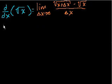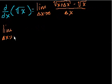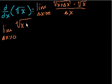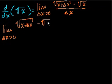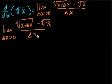Let me rewrite what I have here: the limit as Δx approaches 0 of √(x + Δx) minus √x, all of that over Δx.